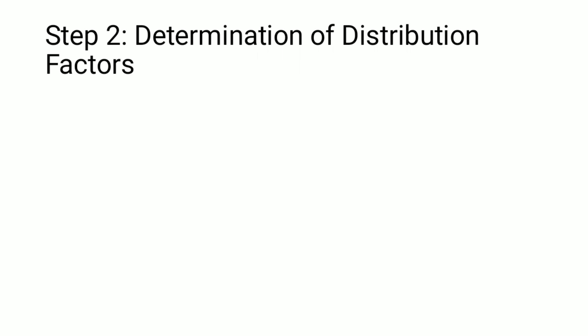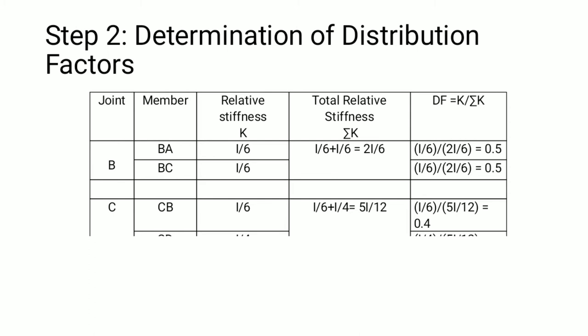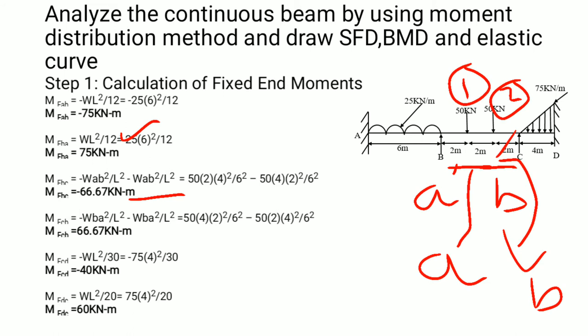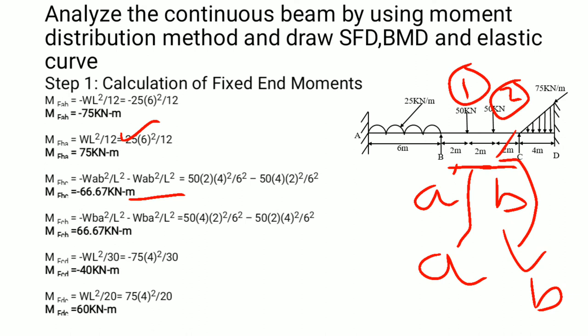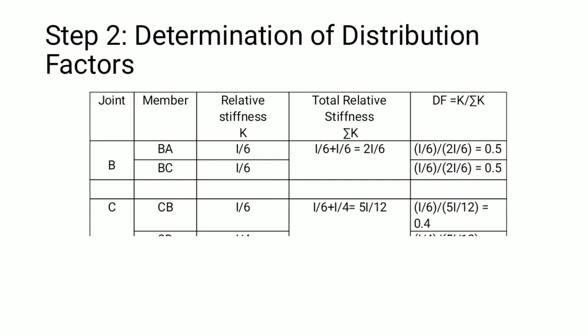The next step is determination of distribution factors. Looking at the beam, A and D are fixed ends, while B and C are interior joints. For joint B, the members passing through it with B as origin are BA and BC. There are two members: BA and BC.